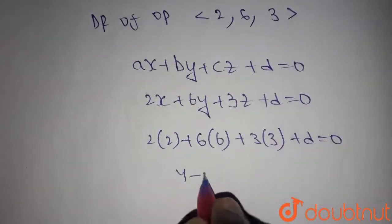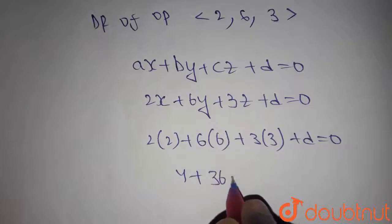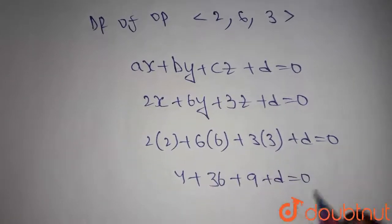Here we get 4 plus 36 plus 9 plus d equals 0, so d equals minus 49.